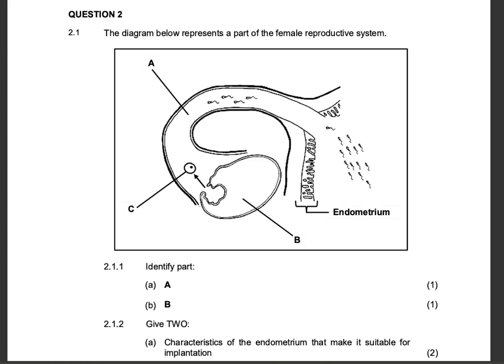Question 2.1: the diagram below represents a part of the female reproductive system. This is very obvious because we can see the different structures — we can see the ovaries, we can see the fallopian tube, and we can see the uterus. We don't have the full diagram of the uterus, but we can see the uterine lining, which is the endometrium.